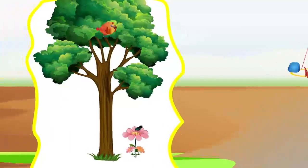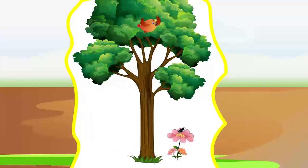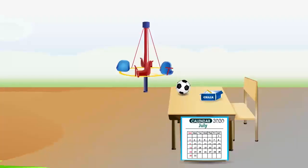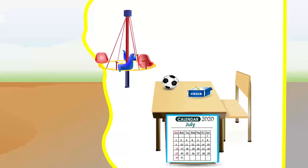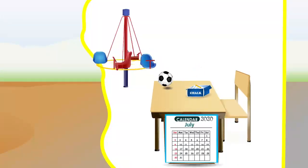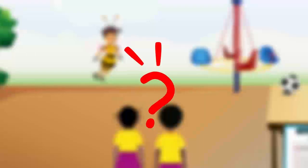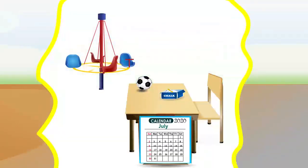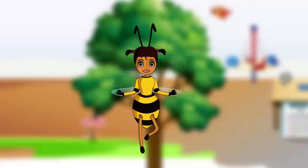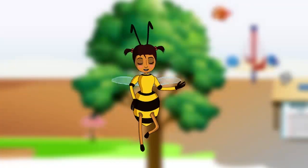These things are living things. These things are non-living things. What is the difference between them? Living things have life. Non-living things don't have life. Very good, smart. You are right.